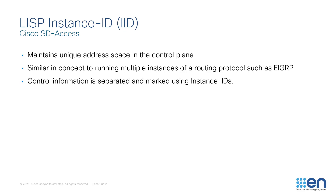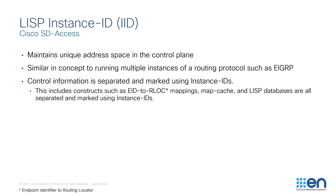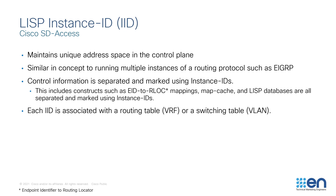LISP Instance IDs work the same way. In LISP, control plane information is separated and marked using the Instance ID in the control plane packets. This provides separation for mappings, map cache, LISP databases, and other LISP constructs. Each Instance ID is associated with a VRF — that's a routing table — or a VLAN, a switching table.